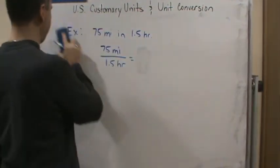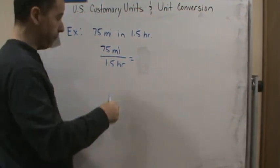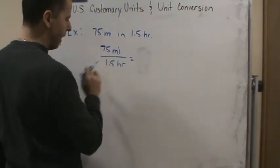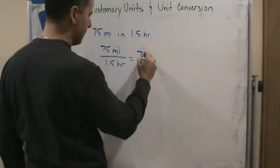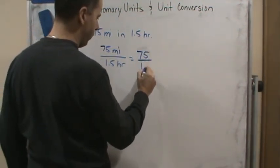So in fact, let's do an intermediate step just because we've done this before. We could split this up. So this would be the same as 75 divided by 1.5.